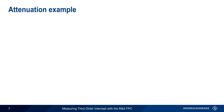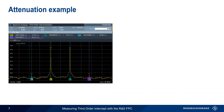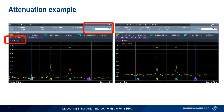Let's look at an example on the FPC. If our input attenuation is 0 dB, our measured third-order intercept is 6.5 dBm. When we increase input attenuation to 10 dB, our measured third-order intercept does not change. This indicates that the intermodulation distortion we're measuring is coming from the device under test, not being created within our analyzer.